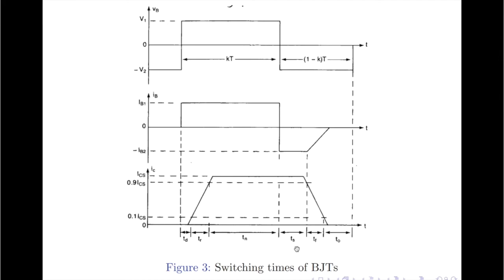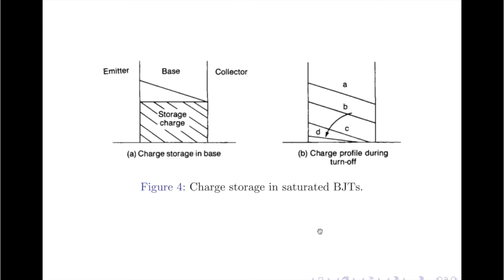It should be noted that as long as the saturating charge exists, the base-to-emitter junction is forward biased even if the base voltage Vb is reversed. Once the saturating charge is removed from the base region, the base-to-emitter junction will start to charge to the negative base voltage −V2 and will be reverse biased. The collector current then starts to decay and reaches zero in a time period called the fall time tf. The rate of decay during the fall time depends upon the capacitance of the reverse biased base-to-emitter junction.